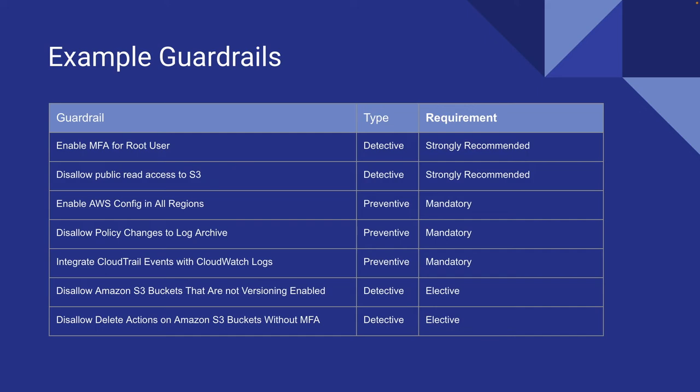Preventative mandatory guard rails also include integrating CloudTrail events with CloudWatch Logs. There are also more elective detective guard rails — for example, one that disallows Amazon S3 buckets that are not versioning-enabled, or disallows delete actions on S3 buckets without MFA. These are elective and can also be detective roles.